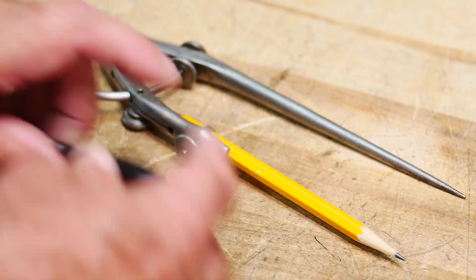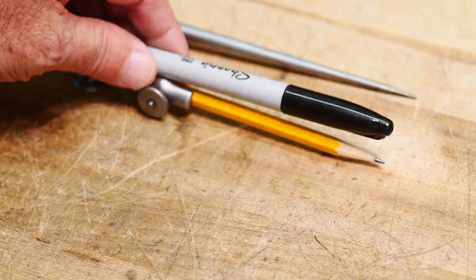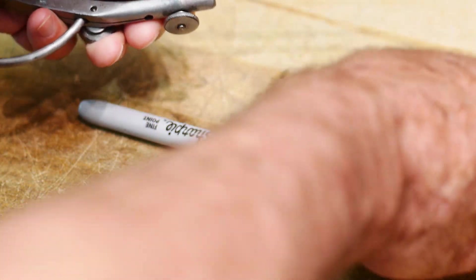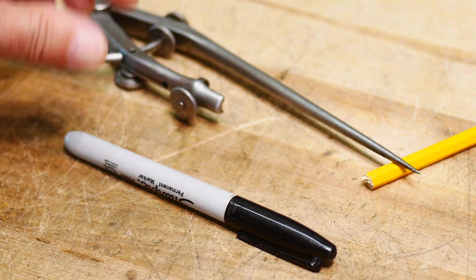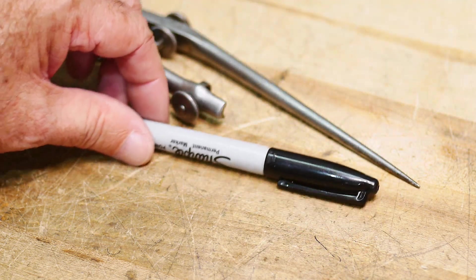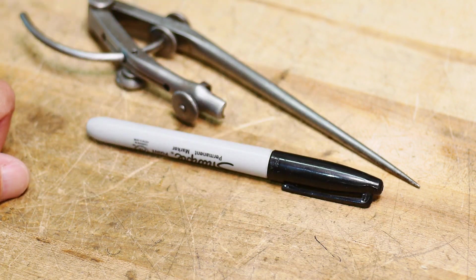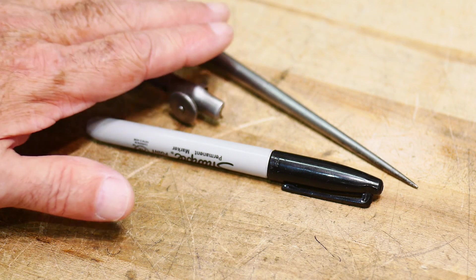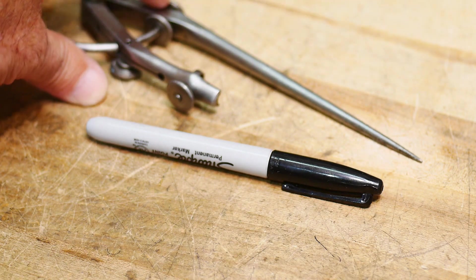For shop use what I really want is a Sharpie, so I'd like to be able to put a Sharpie in here. But the little thing here that goes in is way too big for a Sharpie. There are companies who sell compasses that allow you to insert a Sharpie but they're not as big as this one, they're not as robust. They're more for drafting purposes not for shop purposes. So I really wanted to have something that I could use a Sharpie for this thing.